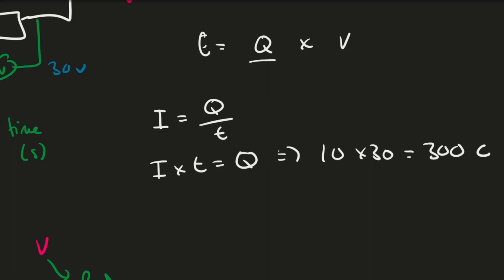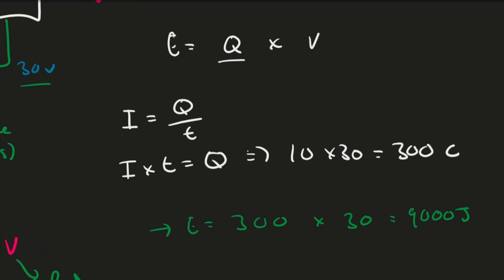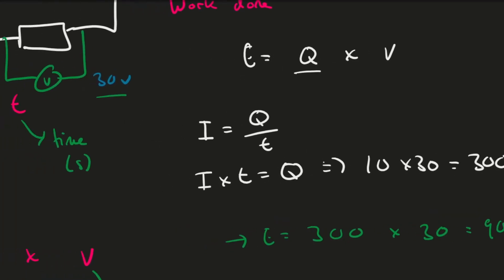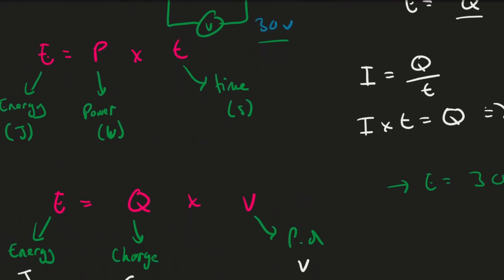Now we plug into our equation: energy transferred = Q × V = 300 coulombs × 30 volts = 9,000 joules. That's how you calculate the amount of energy transferred. As you can see, the energy transfer depends on either power and time, or charge flow and potential difference.